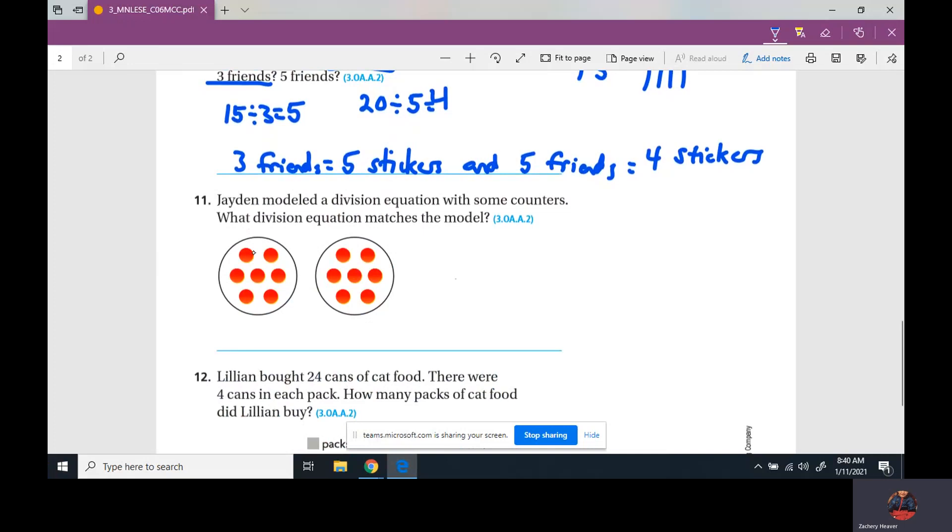Jaden modeled a division problem with some counters. What division problem does this match? Well, we have one, two, three, four, five, six, seven - we have 14 counters with two equal groups and there's seven in each group. Or we could do 14 with seven in each group, two equal groups.